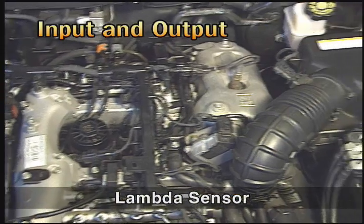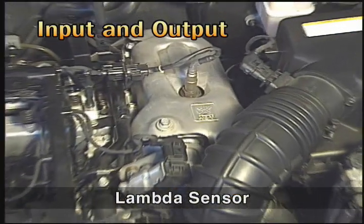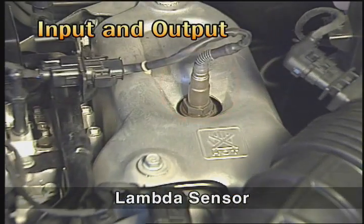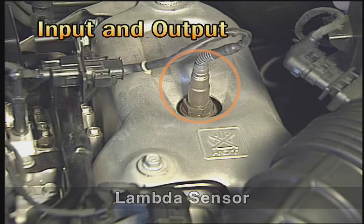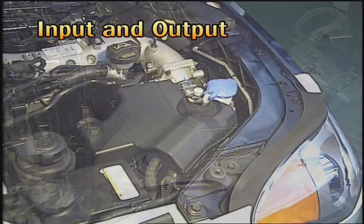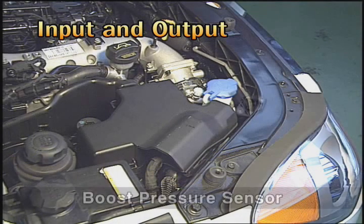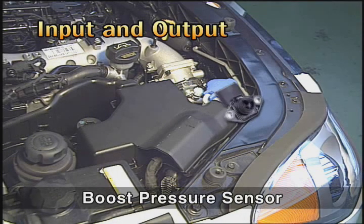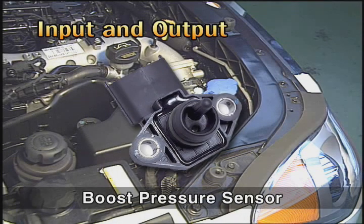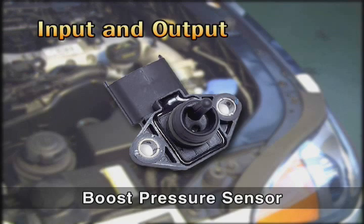The lambda sensor is used for detecting the density of oxygen in the emission combusted in the engine. The boost pressure sensor controls the VGT by detecting the pressure of the engine intake manifold.